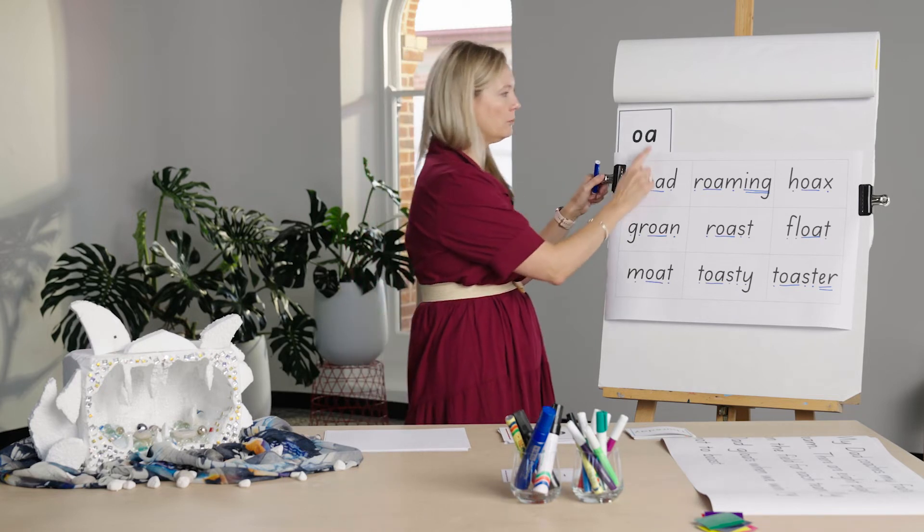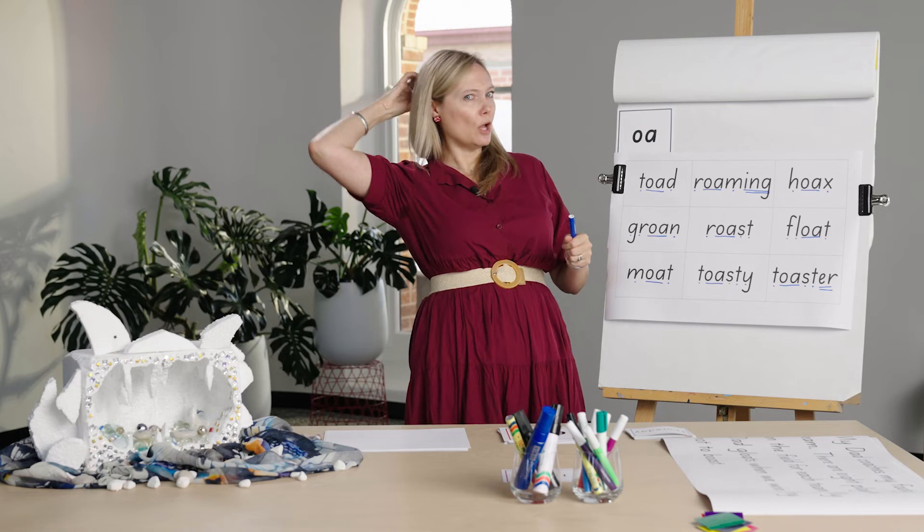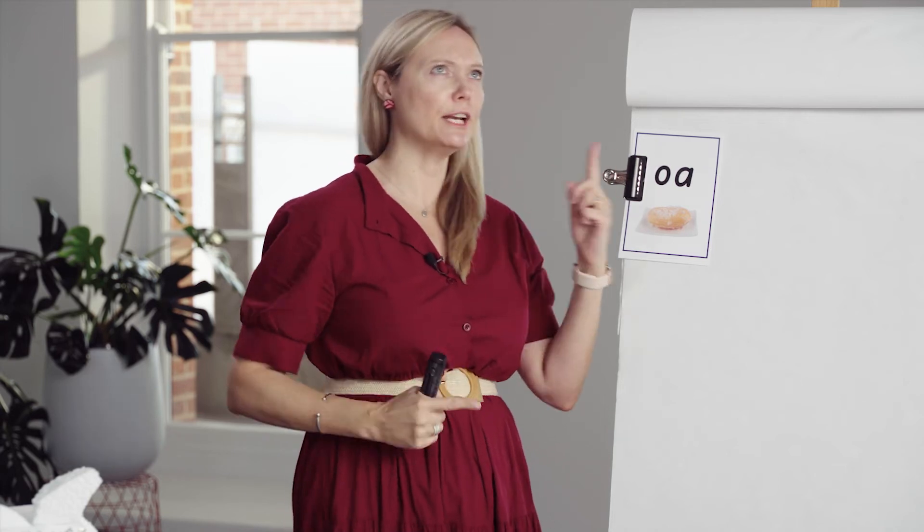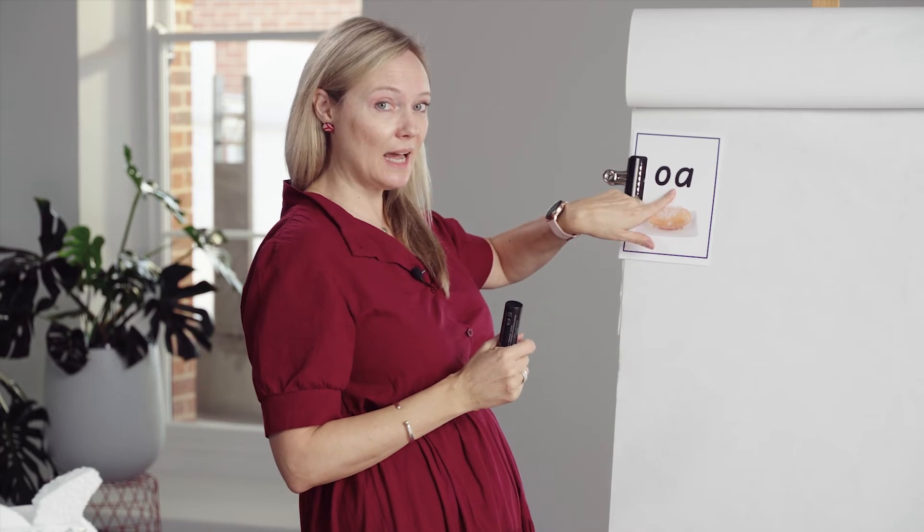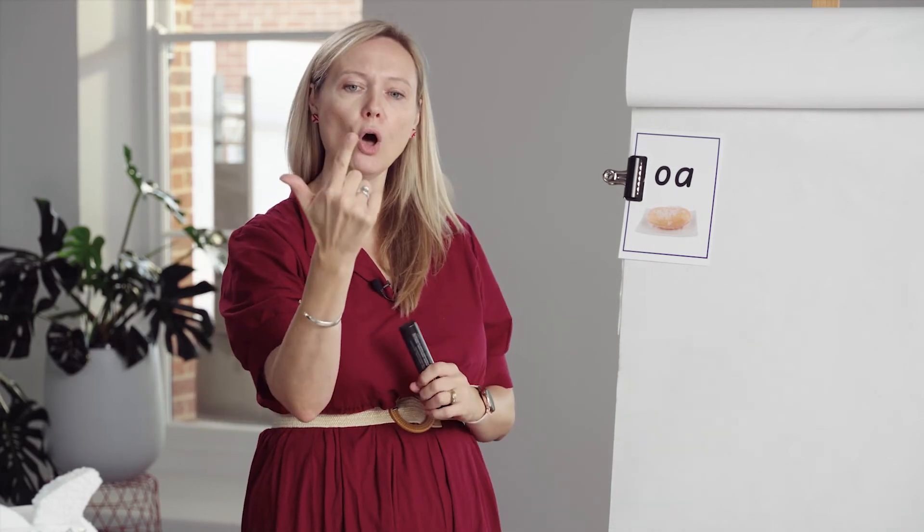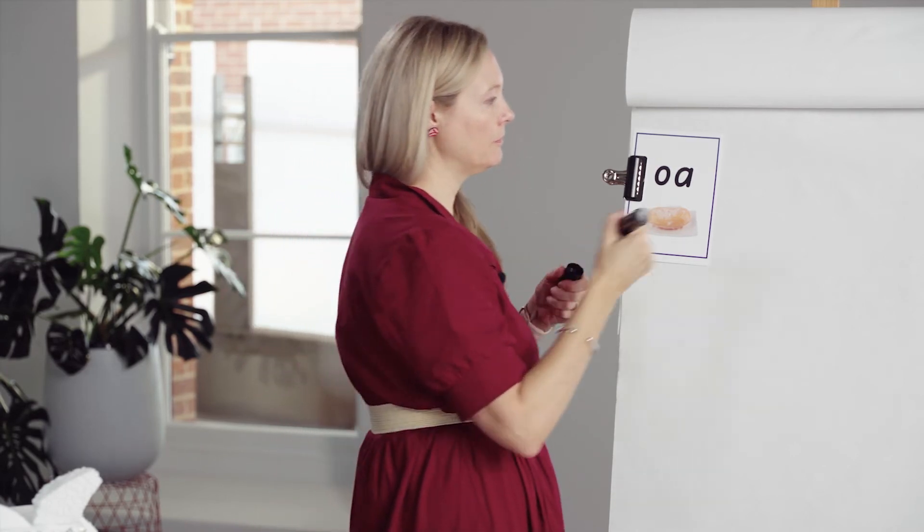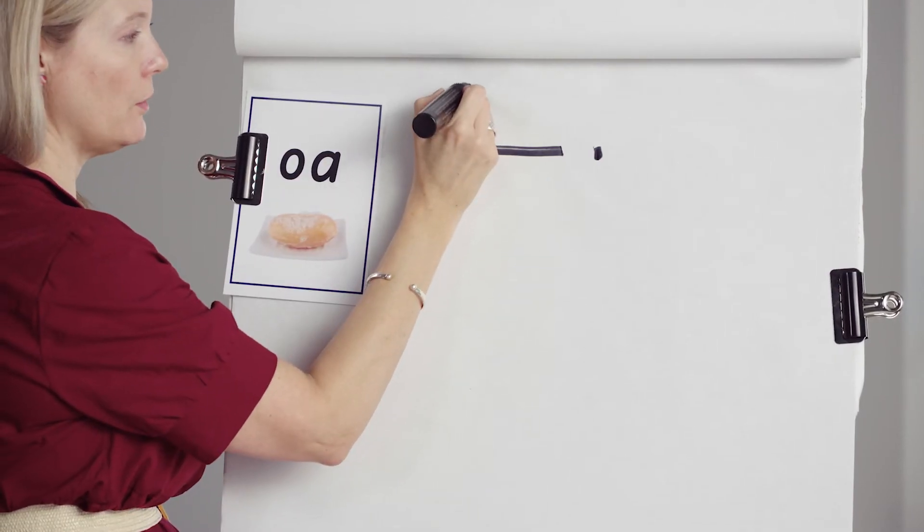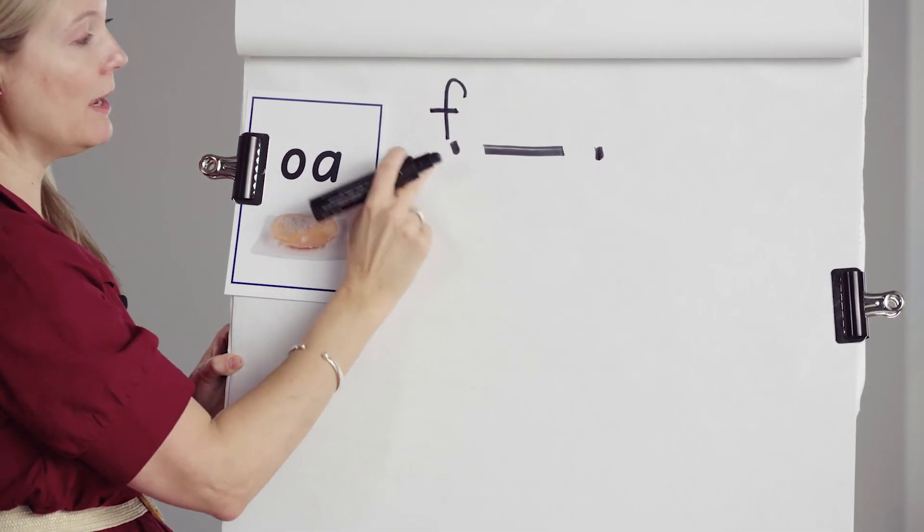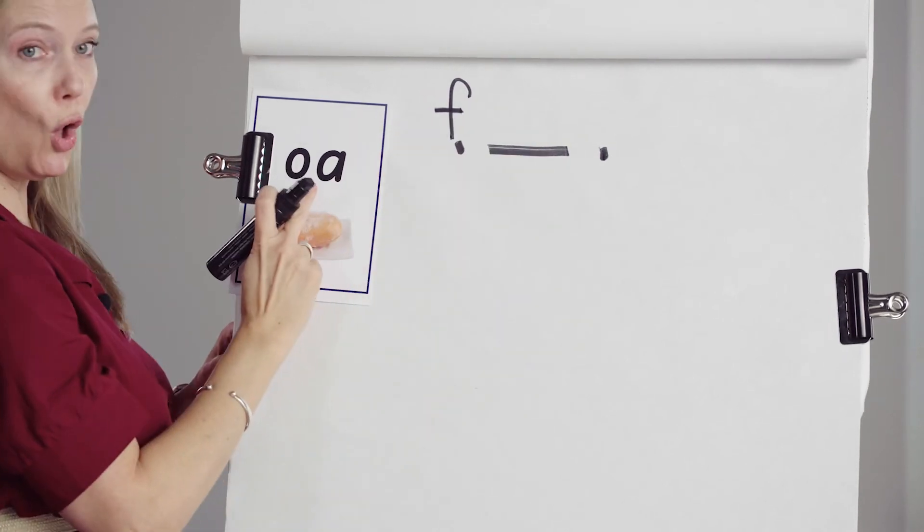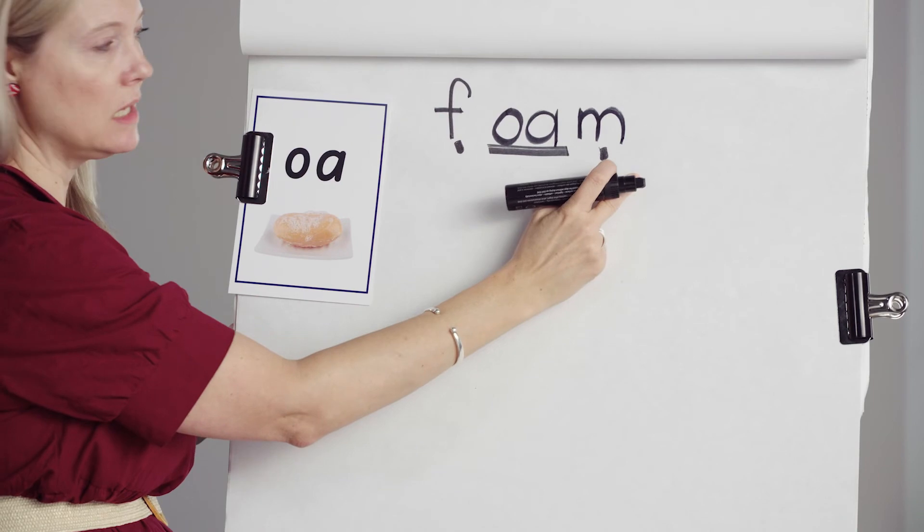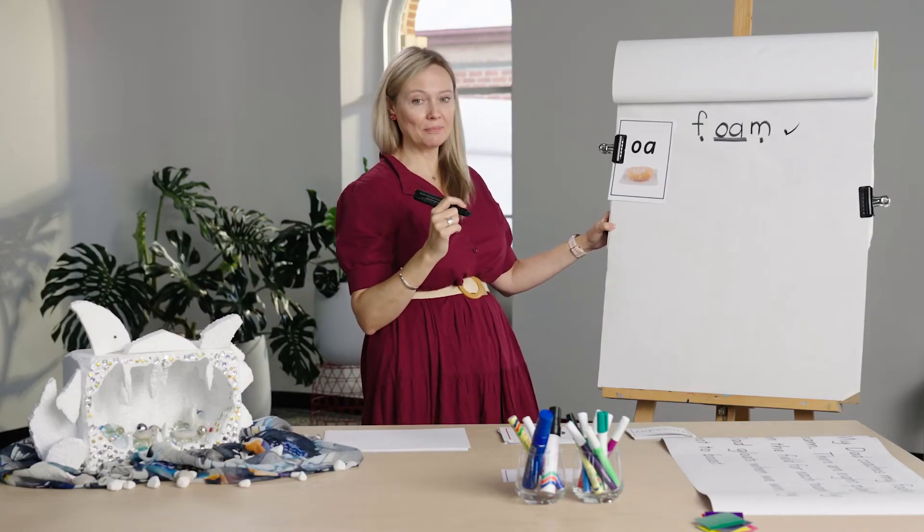Should we do some spelling? Let's move o-a from our short-term memory into our long-term memory. Writing is so good for that. Ready to write? Here's our grapheme we're practicing today, o-a. Our first word is foam. F-o-a-m. Three phonemes. First phoneme f, o-a, m. Foam. I'm giving myself a tick.